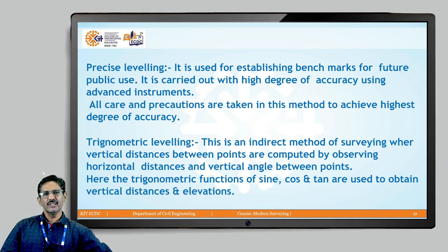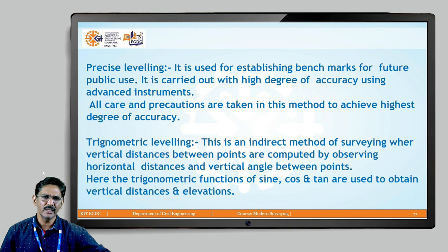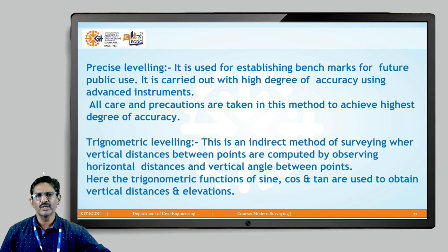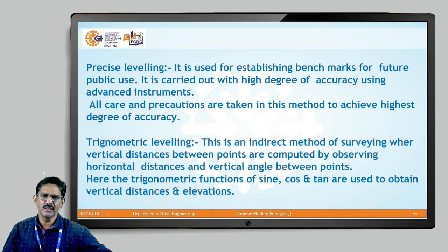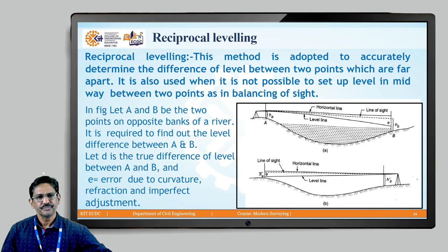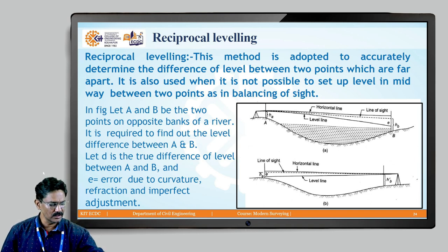Precise leveling is surveying done for a very high degree of accuracy, where all care and precautions are taken to get the highest degree of leveling with no errors. Trigonometrical leveling is an indirect method of surveying where vertical distances between points are computed by observing horizontal distances and vertical angles using trigonometrical functions of sine, cosine, and tangent to obtain vertical distances and elevations. We will go into trigonometrical leveling in more detail in subsequent chapters.